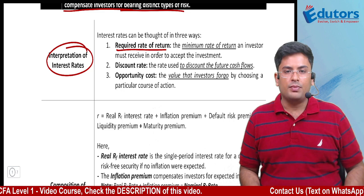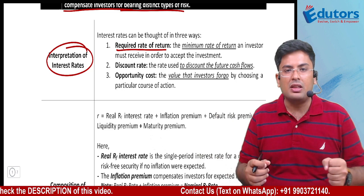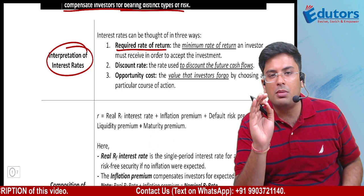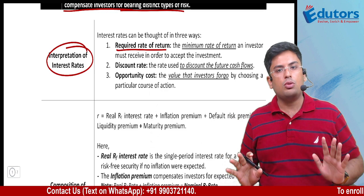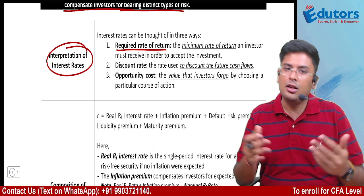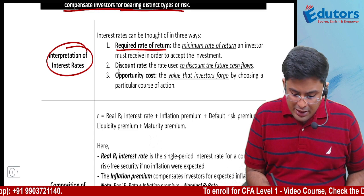The first is required rate of return. This is very simple. Whenever you invest anywhere, you have something in mind — you think, 'I need at least this much return.' For example, if people invest in a mutual fund, they might say 15% is what they want. That rate itself becomes the required rate of return. When evaluating any mutual fund scheme, you check whether it will deliver 15% or not — it becomes your benchmark.